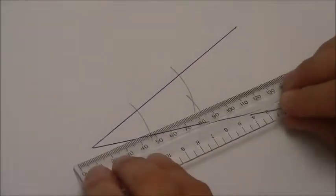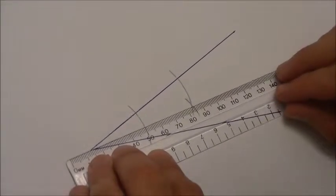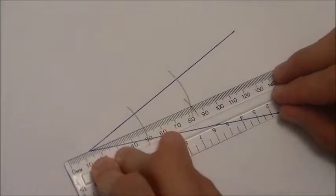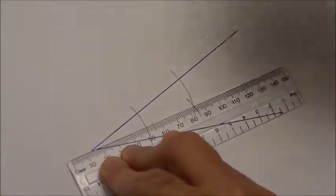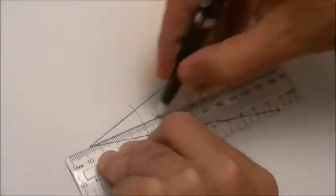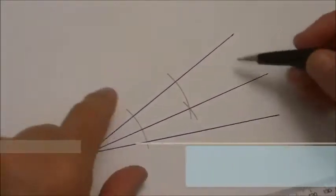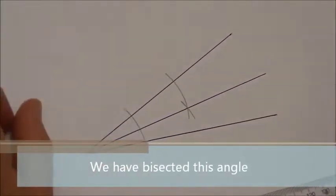So what I do is I grab my ruler, I run it from the corner to the point where they cross over, and I draw a line through there with my ruler. And that is exactly cutting that angle in half.